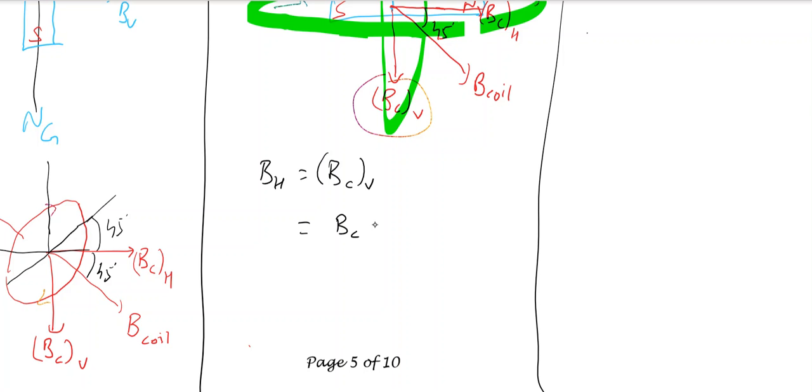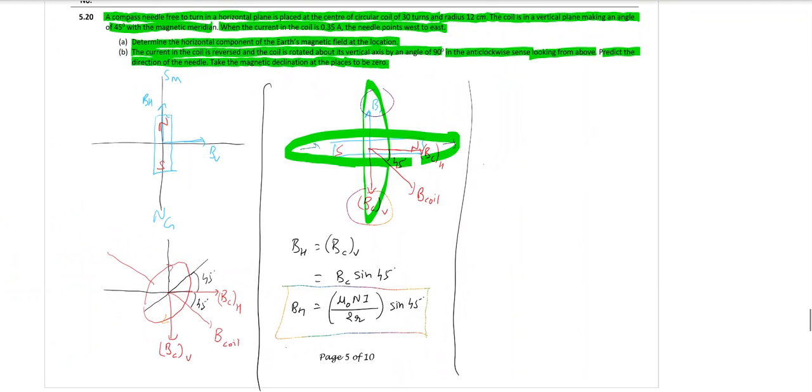So the equation which we can make from this situation is that the magnetic field of the coil is μ₀NI/(2R). So μ₀NI/(2R) times sin(45°), this is how you will get the horizontal component of Earth's magnetic field, which is the only component because the vertical component is zero.